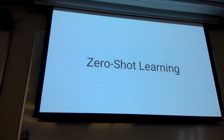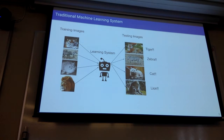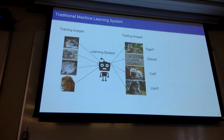First, what is zero-shot learning? Before describing zero-shot learning, let us first look at how a traditional machine learning system works. In traditional machine learning, we train our system with examples from a fixed set of classes — for example, images of tigers, zebra, cat, and lion. During testing, we test the system with images of the same set of classes.